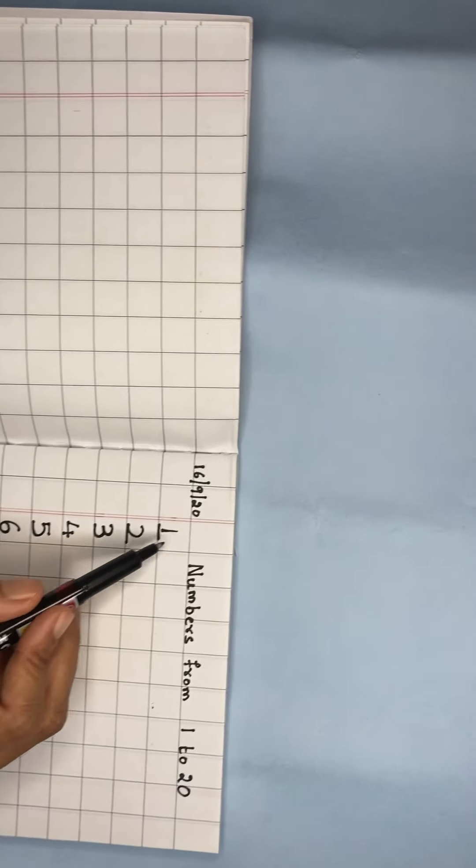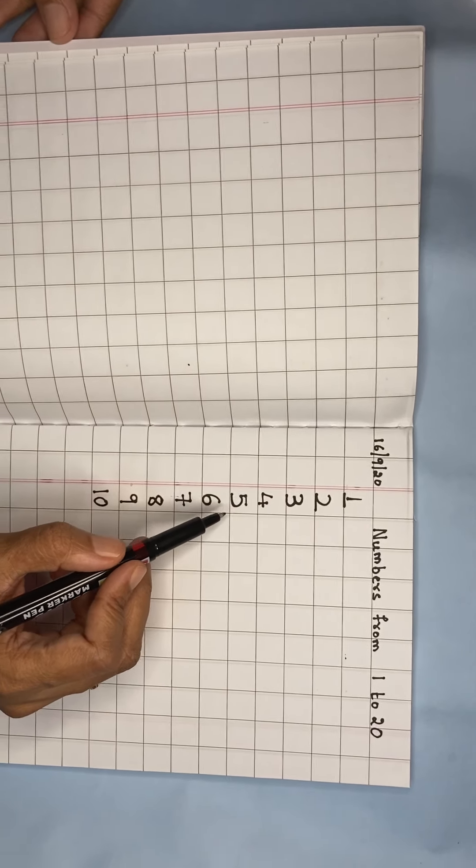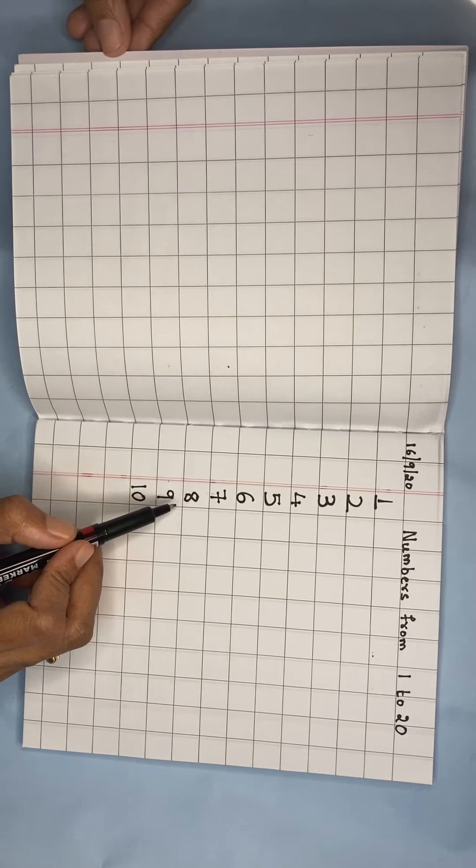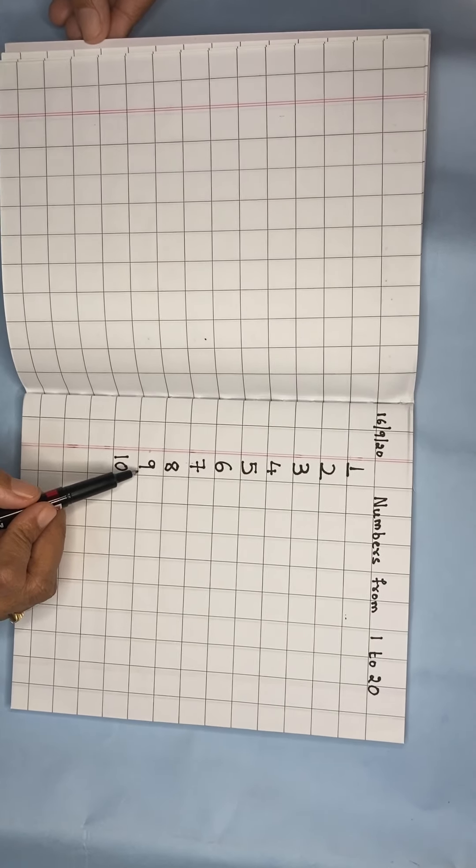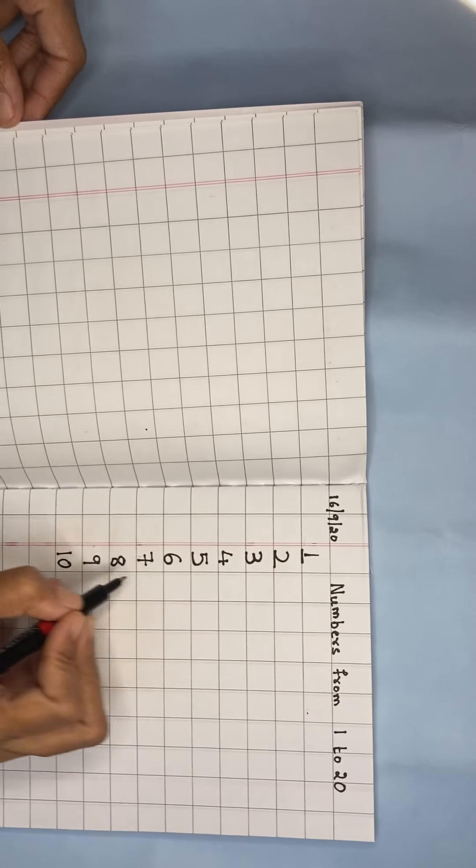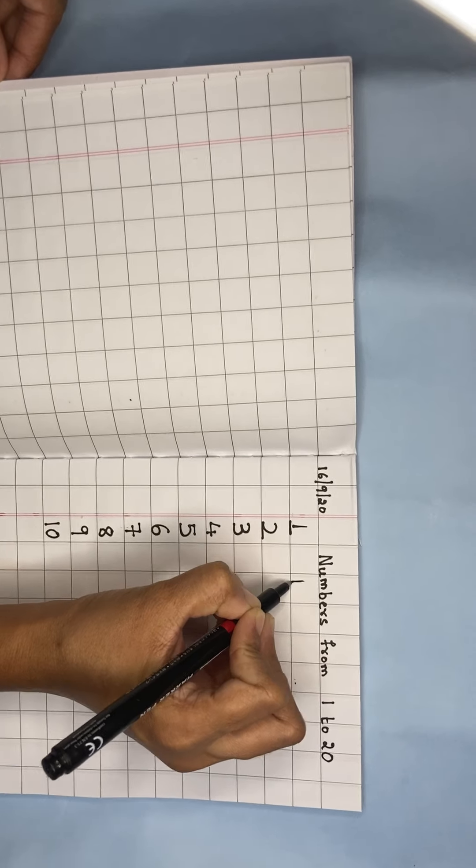One, two, three, four, five, six, seven, eight, nine, ten. We shall now leave one line and then go to the next number, that is 11.